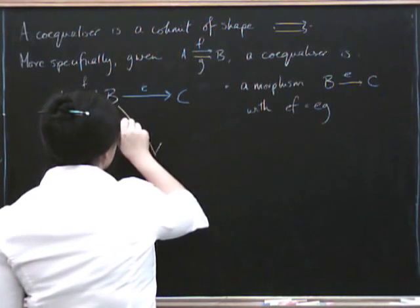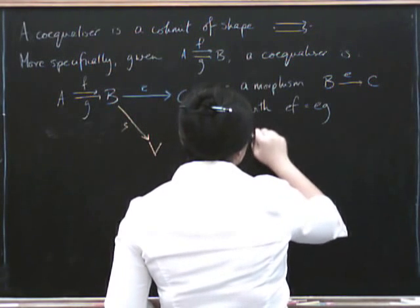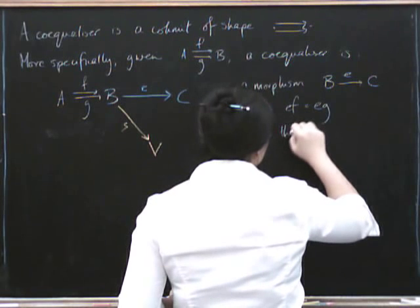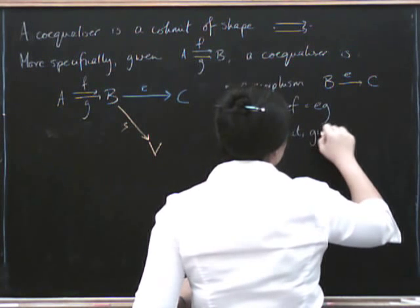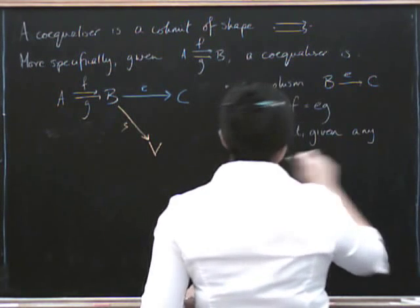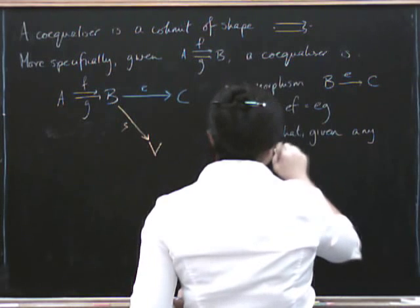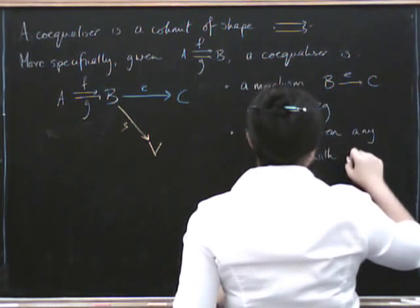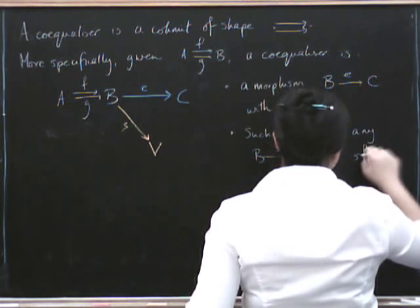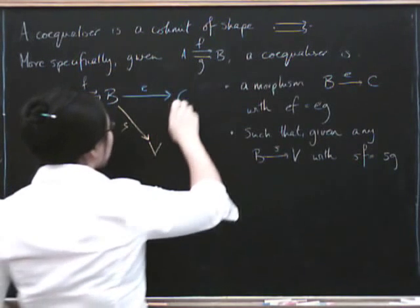Such that, given any morphism B to V, with the same commuting condition, with SF equals SG, well, we've got to have a unique factorization.